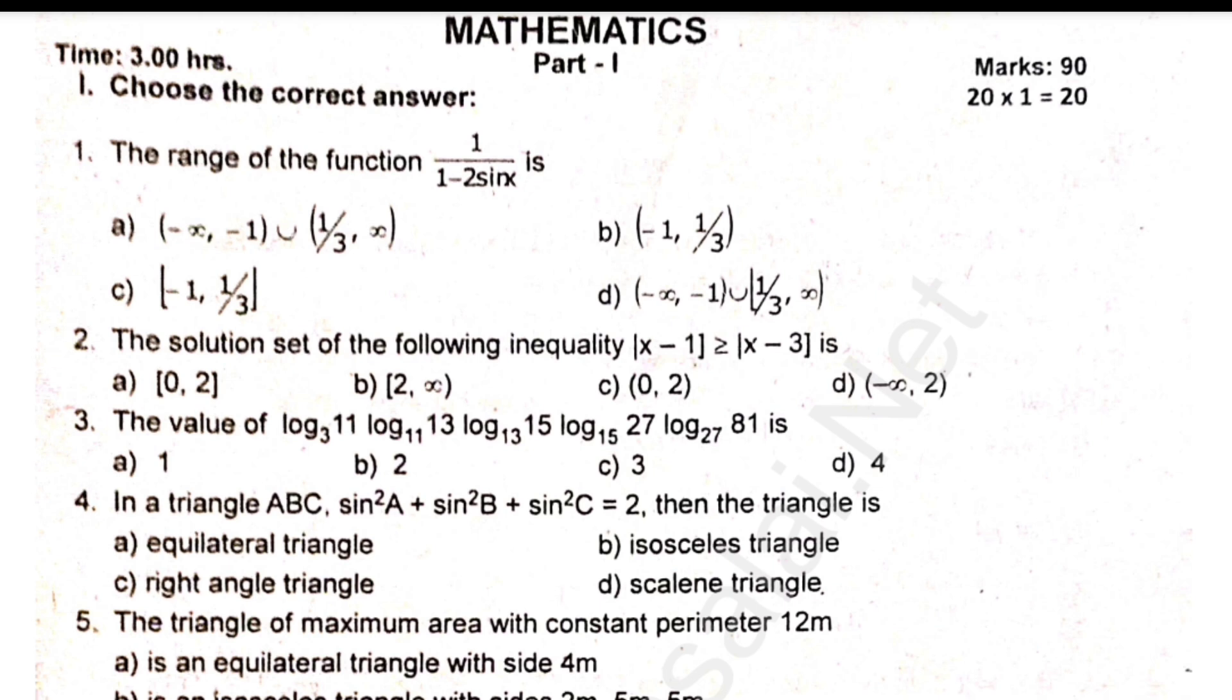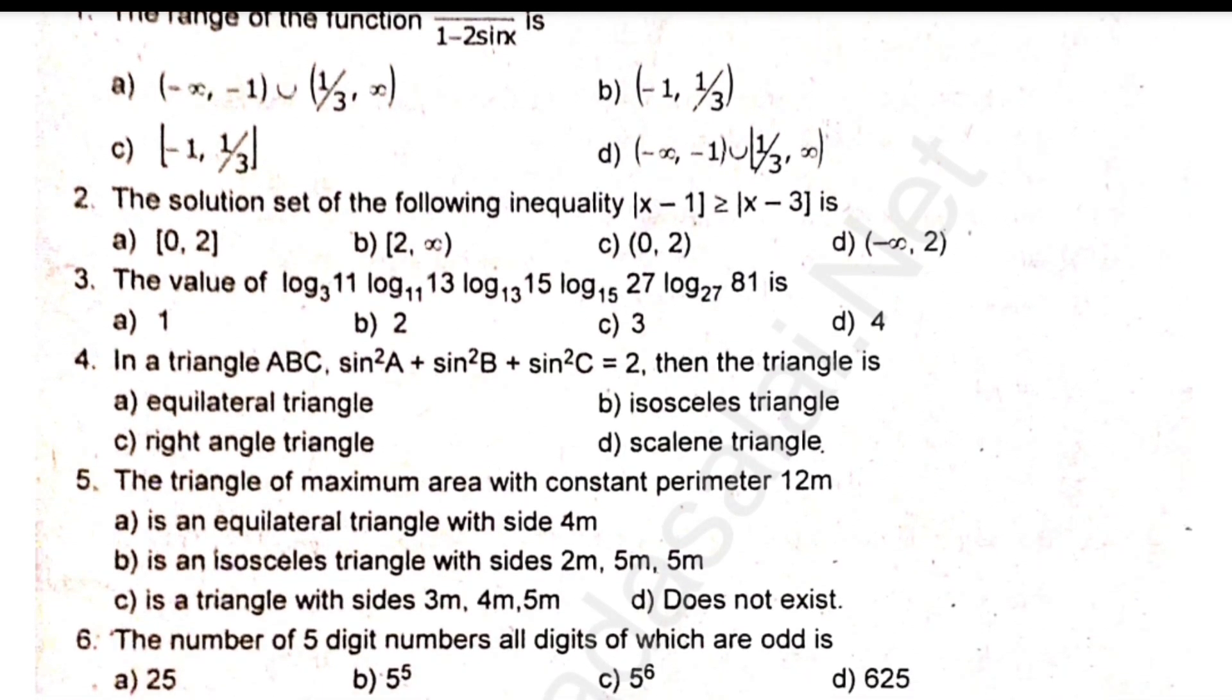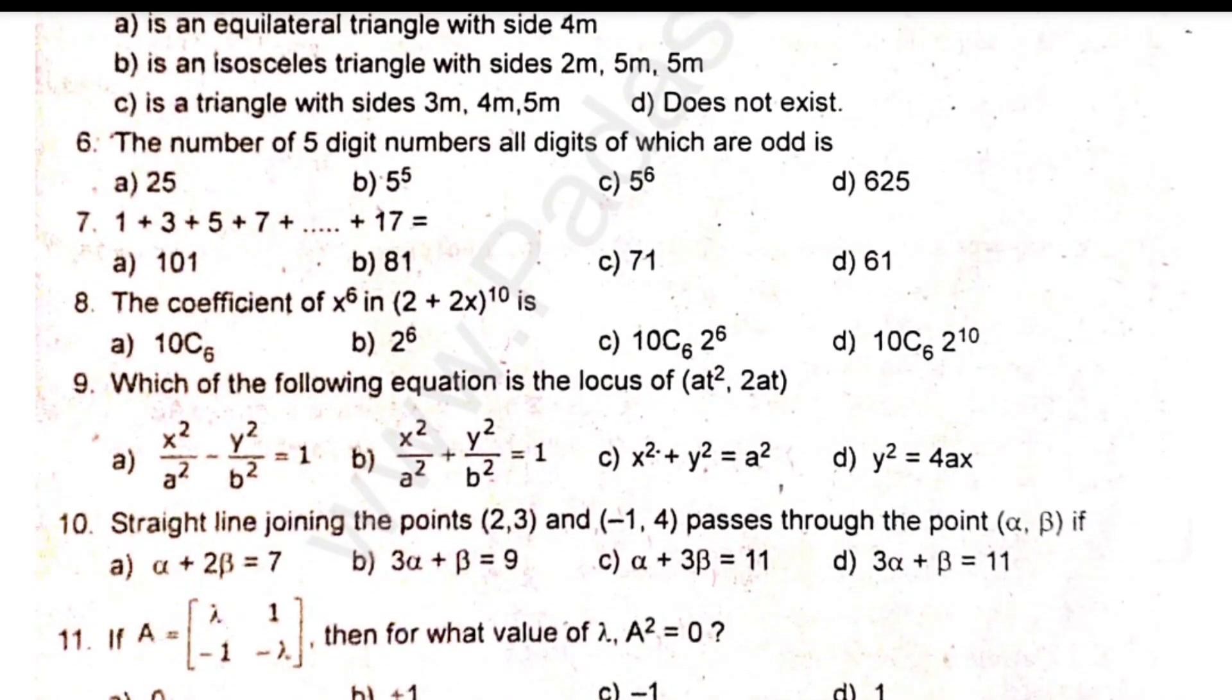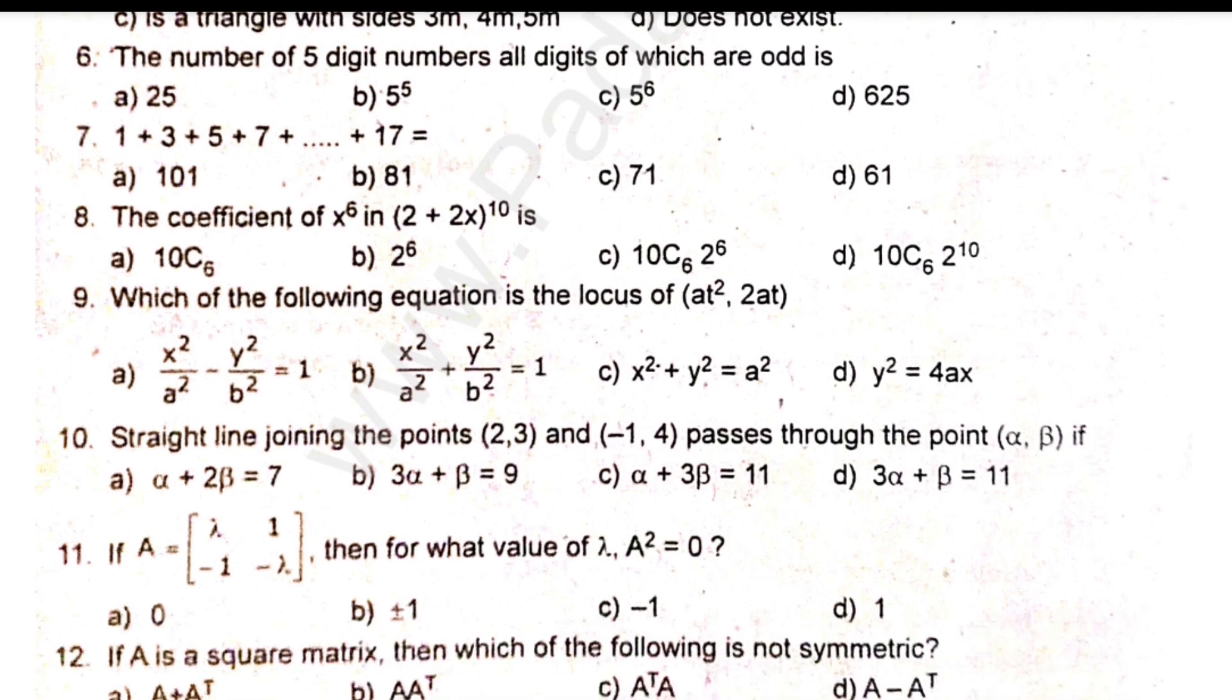Let's see. The range of the function. The solution set of the following inequality. The triangle of maximum area with the constant perimeter 12 meter. Which of the following equation is the locus of? If A is a square matrix, then which of the following is not symmetric?